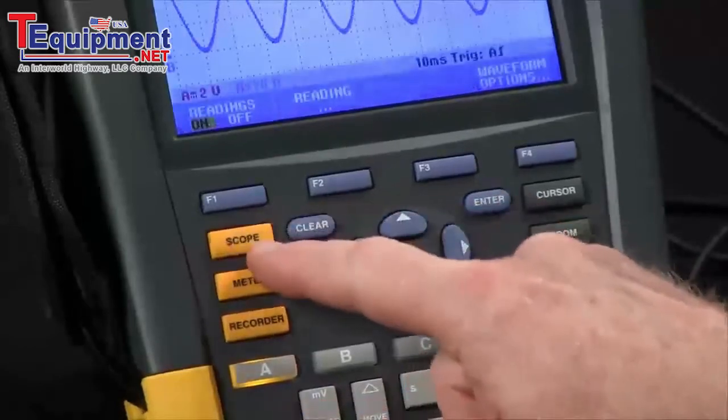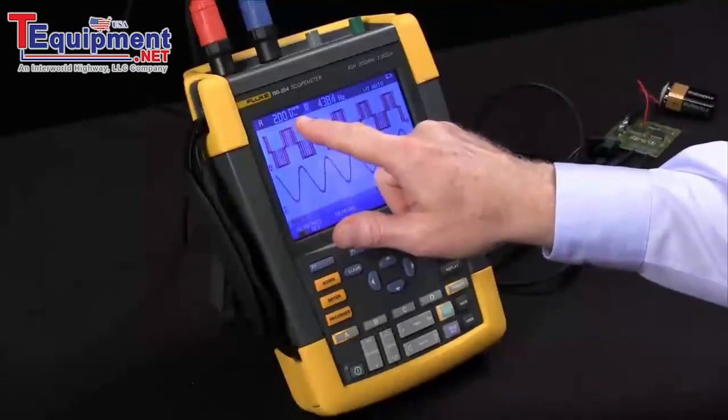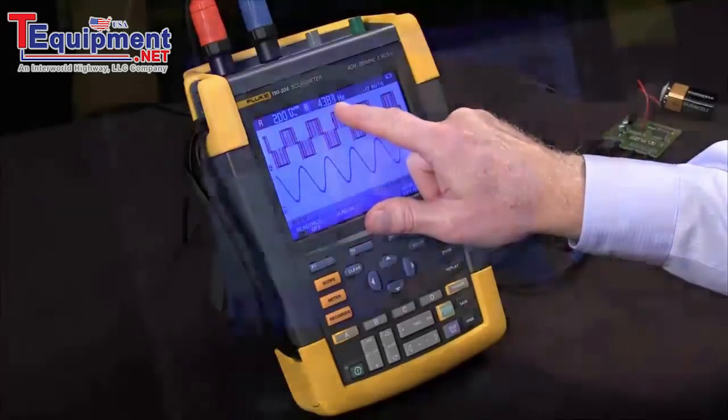We'll hit the scope button. Our readings are already turned on. We can see channel A set for volts PWM and channel B for frequency.